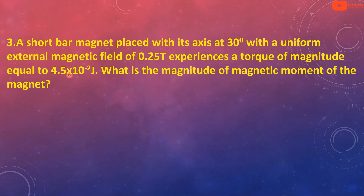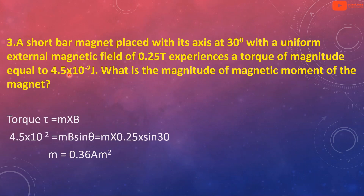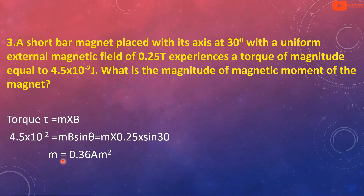Using the torque equation: tau equals m B sin theta. Rearranging, m equals tau divided by (B sin theta), which is 4.5×10⁻² divided by (0.25 × sin 30°). The magnetic moment m equals 0.36 ampere metre square.